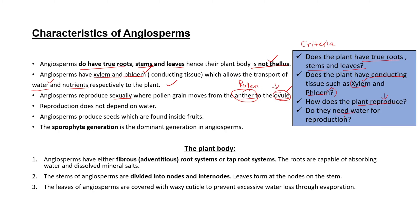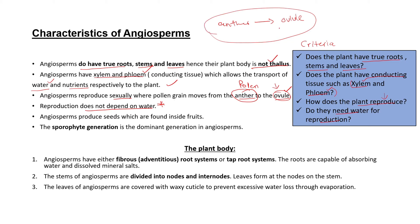The last question is: do angiosperms need water for reproduction? In angiosperms, reproduction does not depend on water at all. Fertilization between gametes can take place without water — the pollen moves from the anther to the ovule and a seed is created in the absence of water. This means angiosperms do not need water for reproduction to take place.